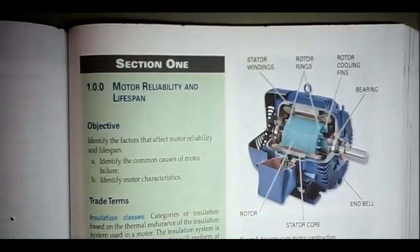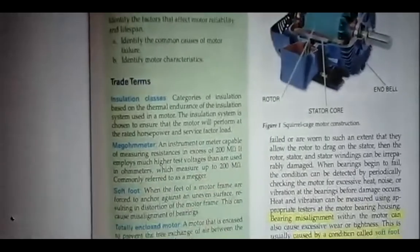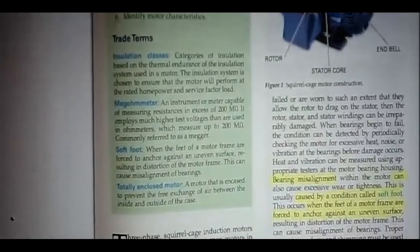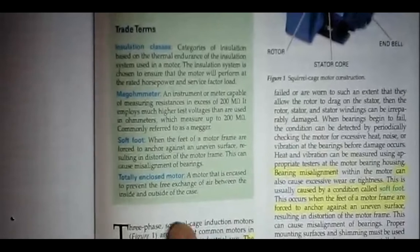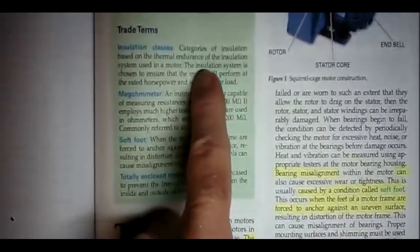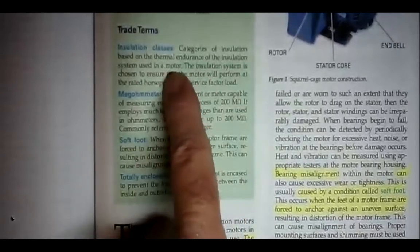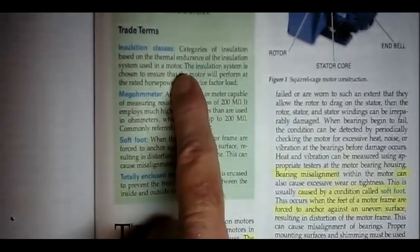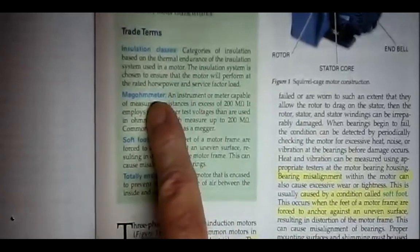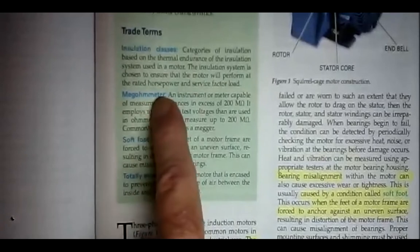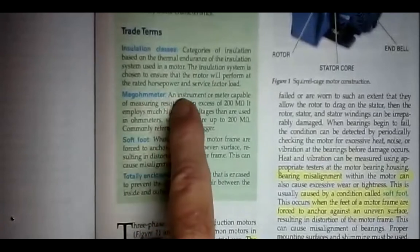Motor Reliability and Lifespan, and as always they start with trade terms. Insulation classes, categories of insulation based on the thermal endurance of the insulation system used in a motor. Megometer, we call this a mega, it's a megometer, it's an ohmmeter for millions of ohms.